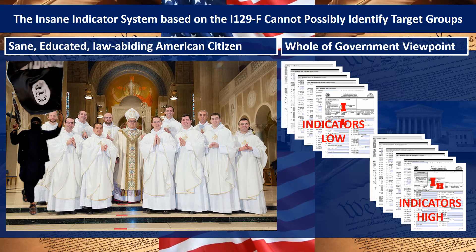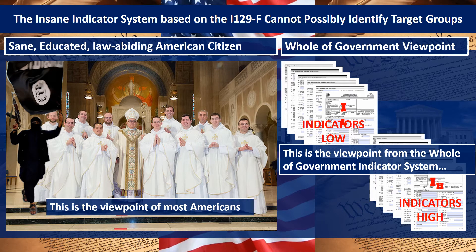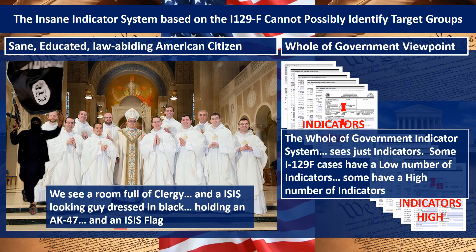Criminals can beat the system — they avoid indicators, as shown in videos one and two. So we see a room of clergy and an ISIS-looking figure dressed in black holding an AK-47 and an ISIS flag. The government just sees cases with low and high indicators. Terrorists haven't triggered any national security indicators because they know how to avoid them.